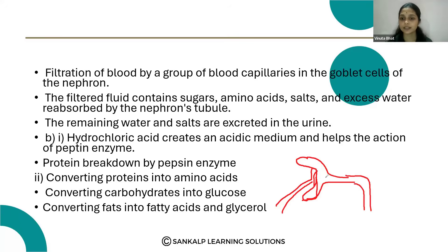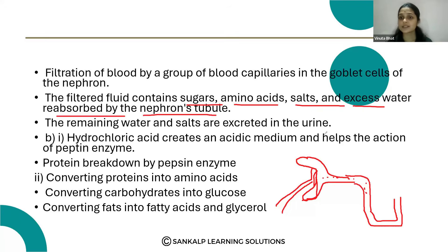The filtrate moves into the tubular part of the nephron. The filtered fluid contains sugar, amino acids, salt, and excess water, which are reabsorbed by the nephron's tubular part. The absorption of water, if required, takes place in this part. The remaining water and salt are excreted, moved to the collecting duct, and excreted as urine.